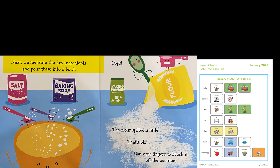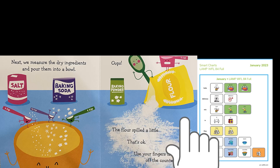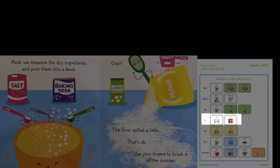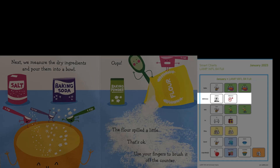Next, we measure the dry ingredients and pour them into a bowl. Oops! The flour spilled a little. That's okay. Use your fingers to brush it off the counter. Here we put the ingredients in the bowl. I wonder what kind of cupcakes we're making. I bet they will be delicious.